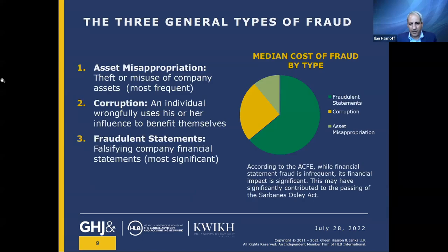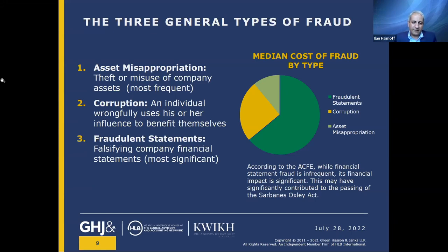The three general types of fraud, according to the ACFE — the Association of Certified Fraud Examiners — are: asset misappropriation, essentially taking assets that don't belong to you; this is the most frequent type. The second type is corruption, when an individual wrongfully uses their influence to benefit themselves — for example, using the company jet for personal use. And finally, fraudulent statements — falsifying company financial statements — which is by far the most severe and most significant type of fraud. Asset misappropriation is the most frequent, and fraudulent statements are most significant.